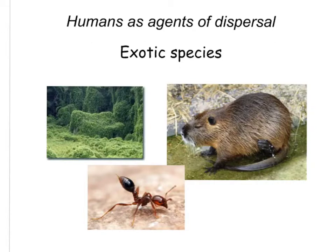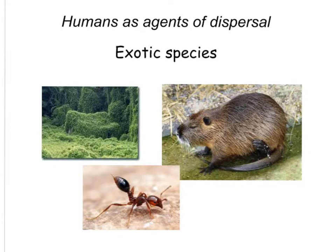Humans can certainly be agents of dispersal. In recent history, exotic species have been a problem. Exotic species simply refers to new species introduced by humans into an area where they did not exist before. Here are some examples of exotic species. This is a picture in Michigan of a vine called kudzu. It's in the pea family and was introduced into the U.S. from Japan in the late 1800s, and it is very invasive.